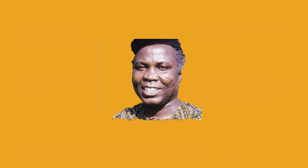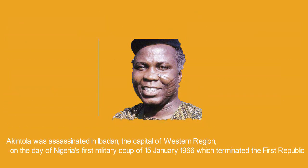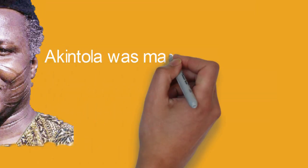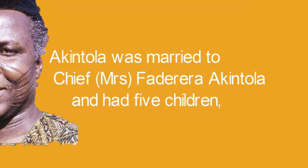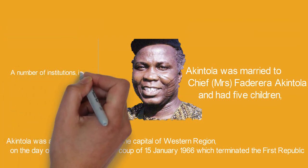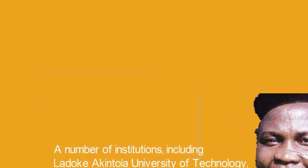Akintola was married to Chief Mrs. Faderera Akintola and had five children, two of whom were later to become ministers of state for finance in the Nigerian Third Republic, Chief Yomi Akintola and Chief Dr. Abimbola Akintola. His youngest child, Tokunbo Akintola, was the first black boy at Eton college.